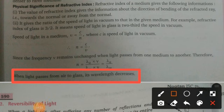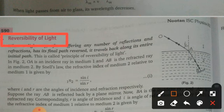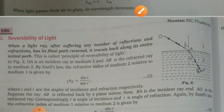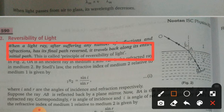Next topic is the reversibility of light. When a light ray, after suffering any number of reflections and refractions, has its final path reversed, it travels back along its entire initial path. This is called the principle of reversibility. In figure number 2, OA is the incident ray in medium 1 and AB is the refracted ray in medium 2.